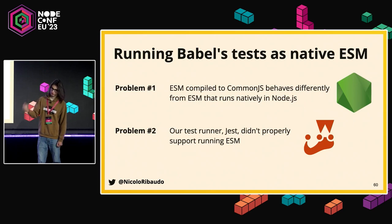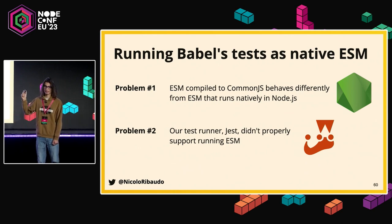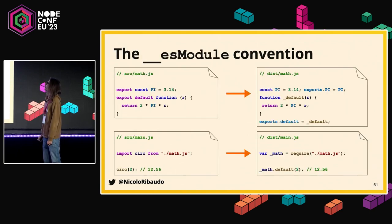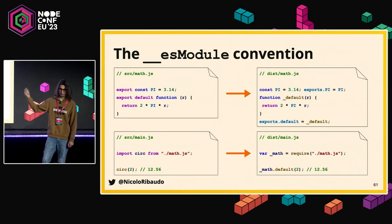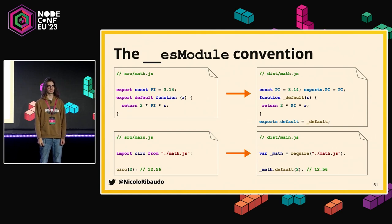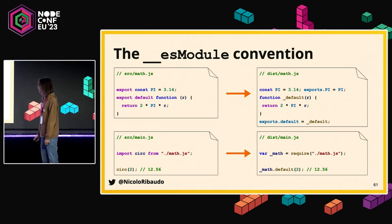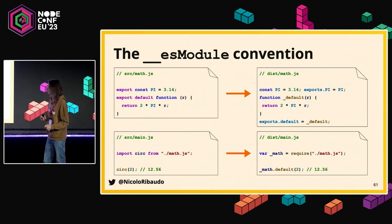We didn't want to start experimenting with published code because migrating to ESM is a breaking change, so we decided to start with tests — and that initially went terribly. ESM compiled to CommonJS behaves differently from native ESM in Node, and our test runner didn't support ESM. Let's analyze these two problems. How many of you have ever seen the __esModule variable in your code? A bunch of you — great.